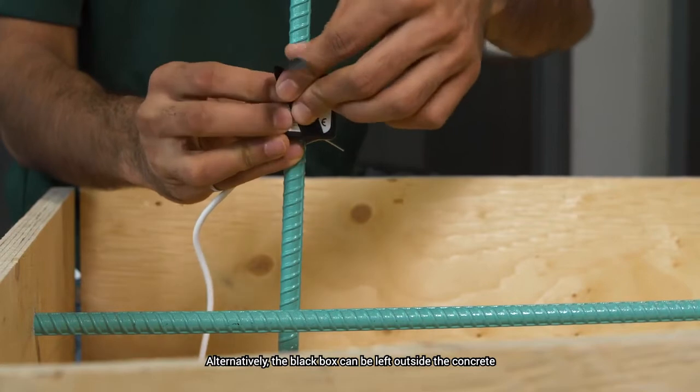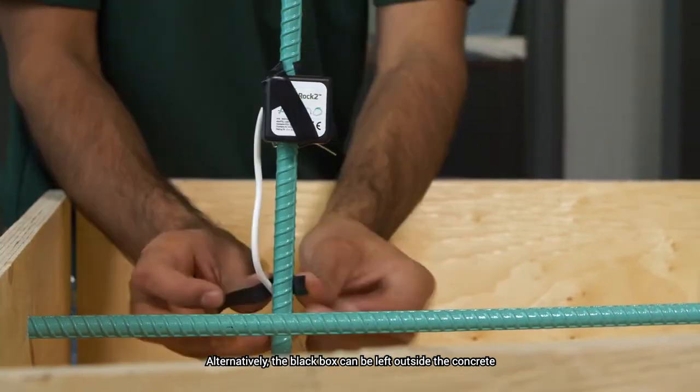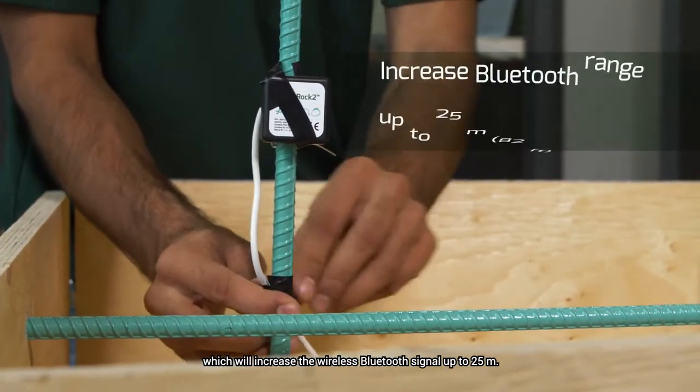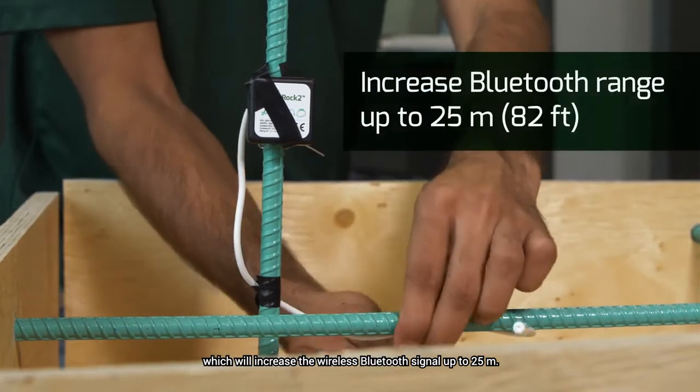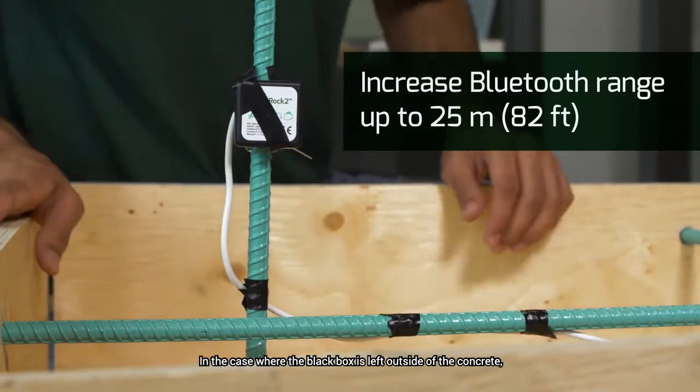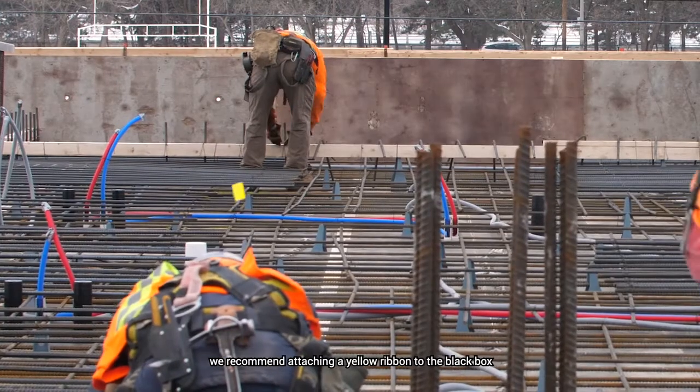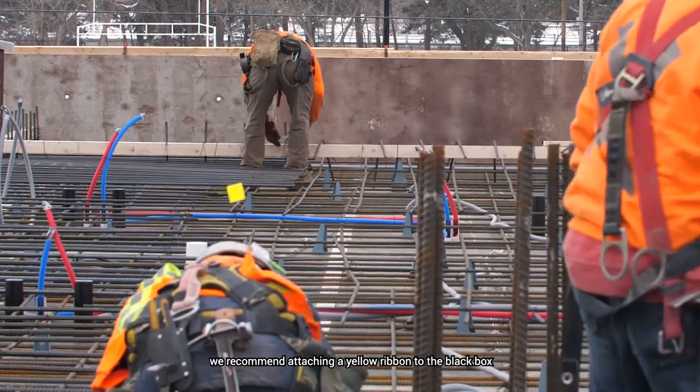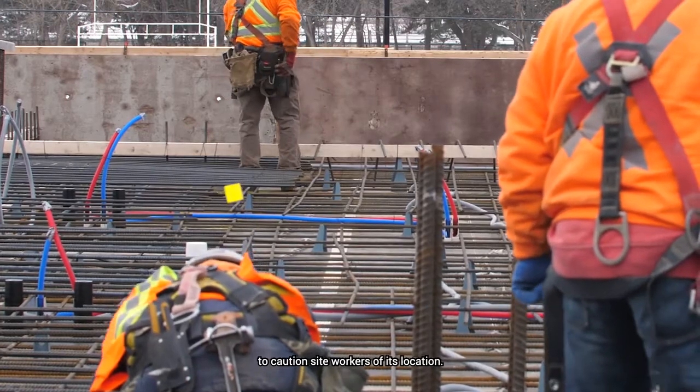Alternatively, the black box can be left outside the concrete, which will increase the wireless Bluetooth signal up to 25 meters. In the case where the black box is left outside of the concrete, we recommend attaching a yellow ribbon to the black box to caution site workers of its location.